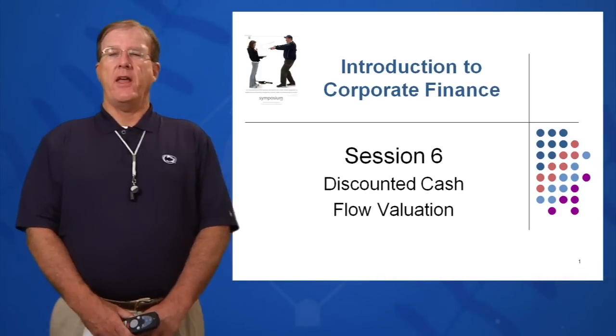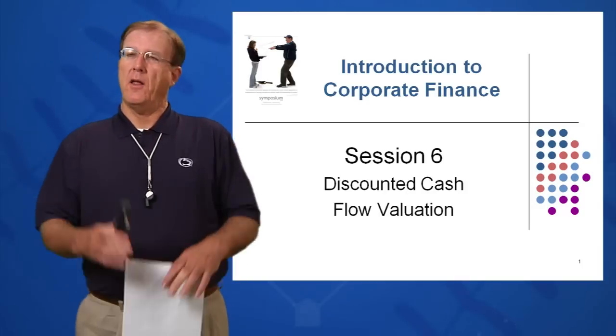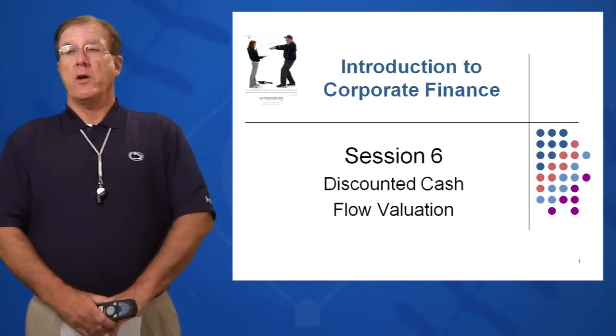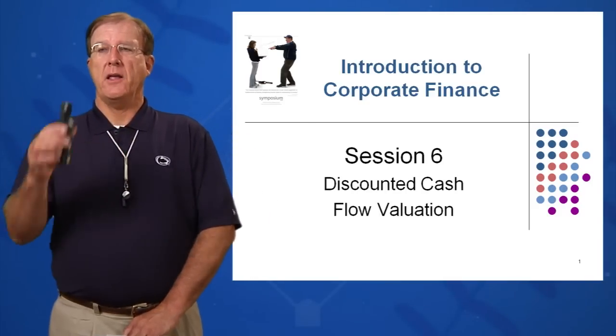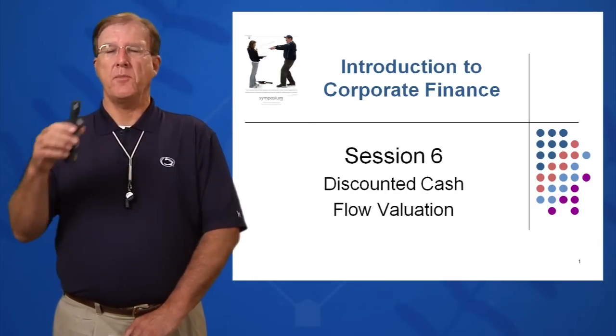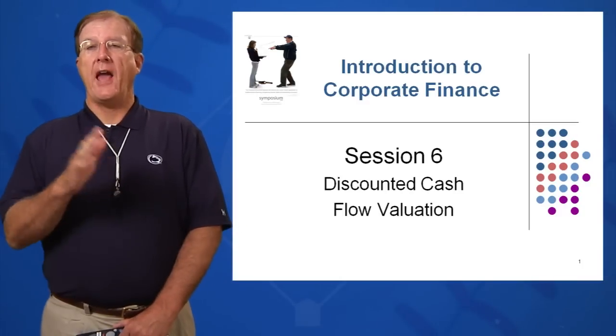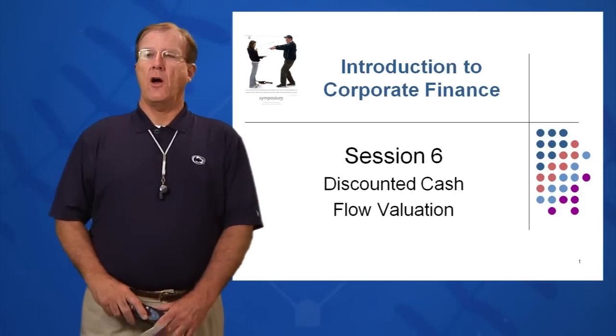This is slightly different than session five where we had a lump sum and we were compounding and discounting. Now we're going to look at separate and distinct cash flows, sometimes different cash flows every year and sometimes equivalent cash flows every year, which we're going to call annuities.